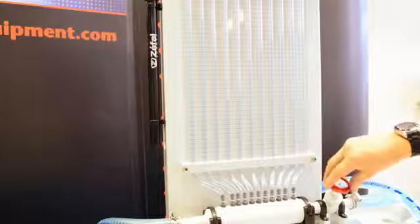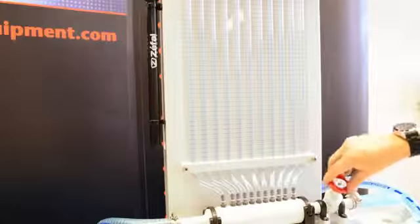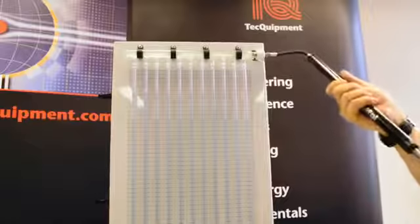A manometer panel holds the manometer tubes vertically. A common manifold above the tubes has an air pressure control valve.